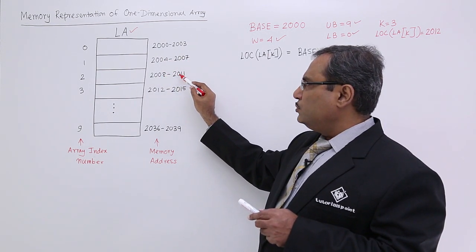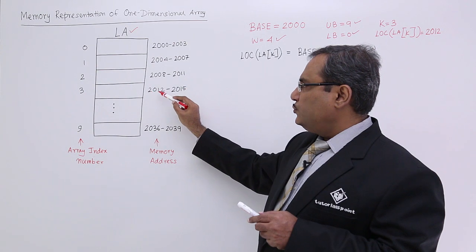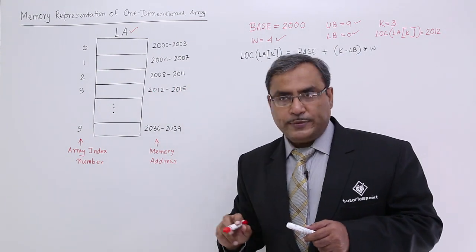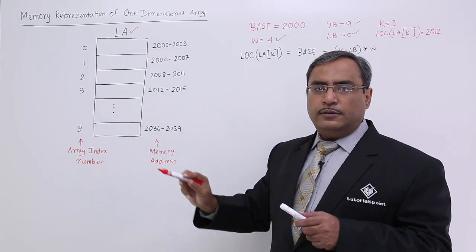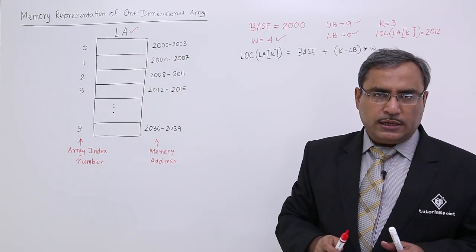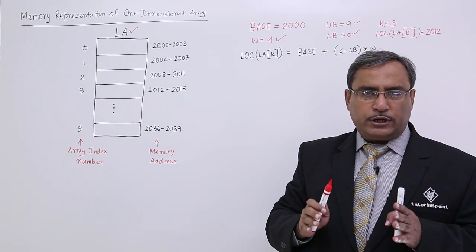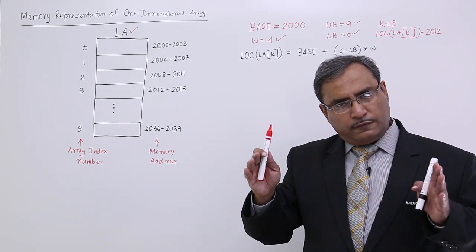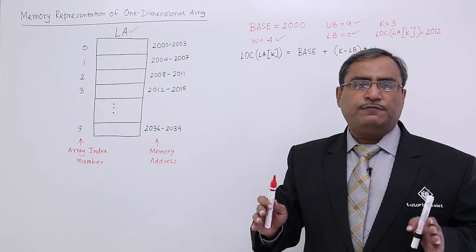2004 to 2007, then 2008 to 2011, then 2012 to 2015. In this way, it will proceed. How many locations we are having? We are having 10 locations. And how many bytes per location? 4 bytes. How many bytes for this full array? That is 40 bytes.